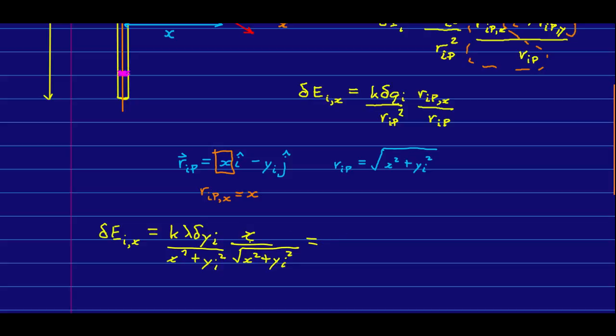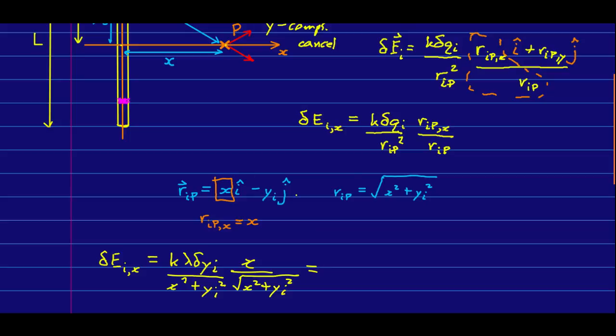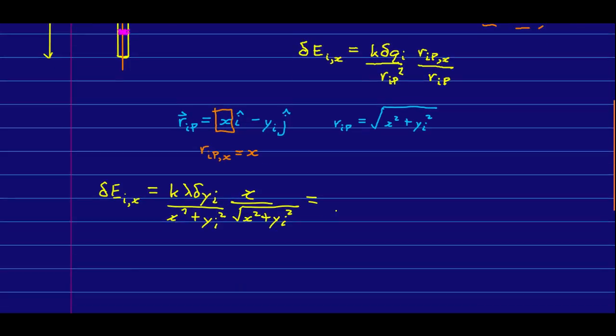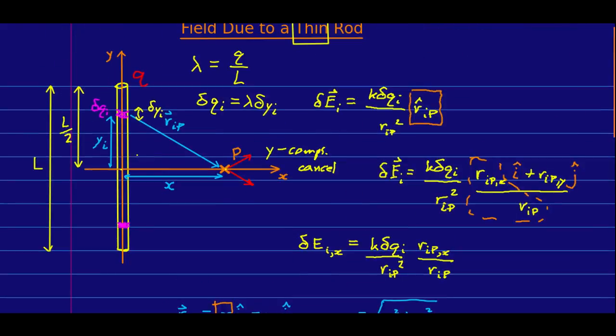Or I could simplify that a little bit. I'm going to pull things that are constant, right? Note, x is constant. We're not moving our point P. So, I'm going to pull things that are constant out front. There is our expression for the E field due to the i-th chunk of rod.